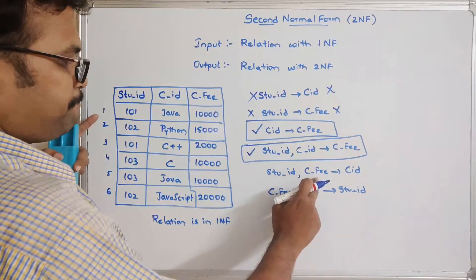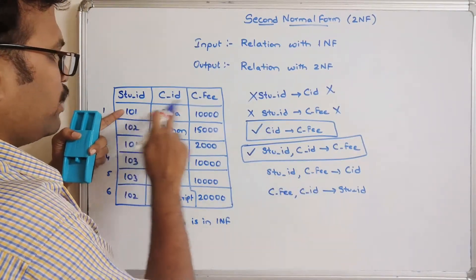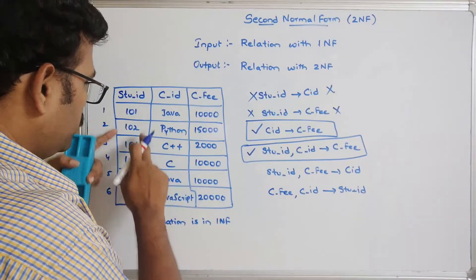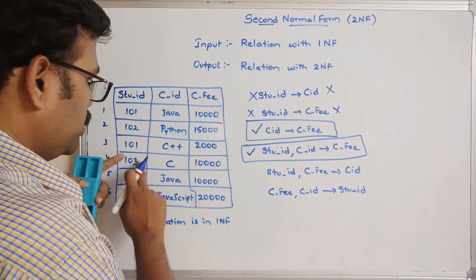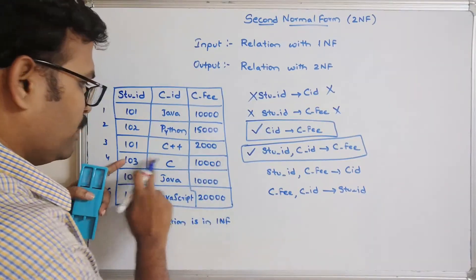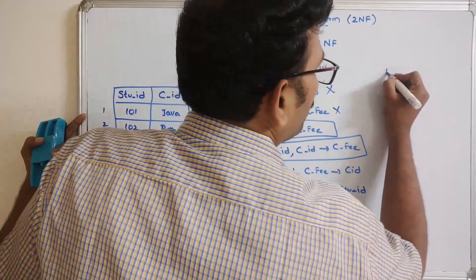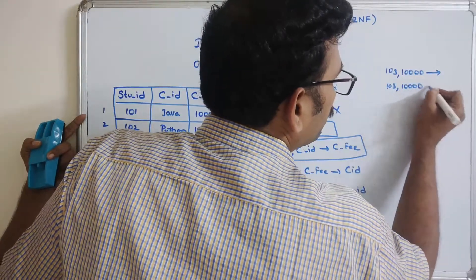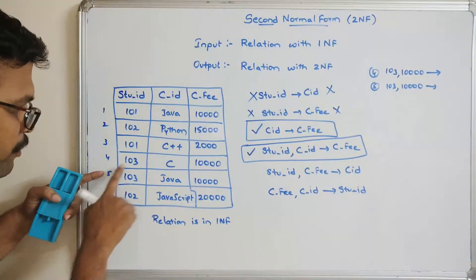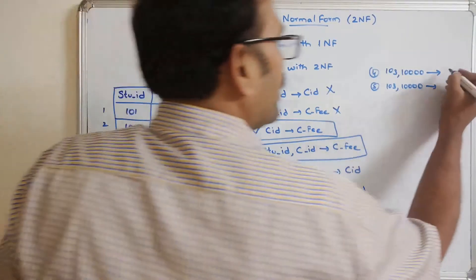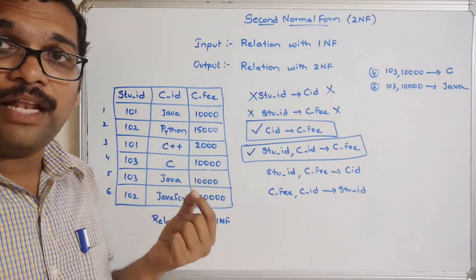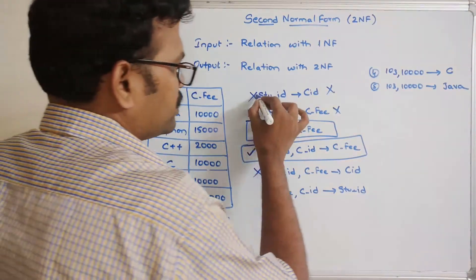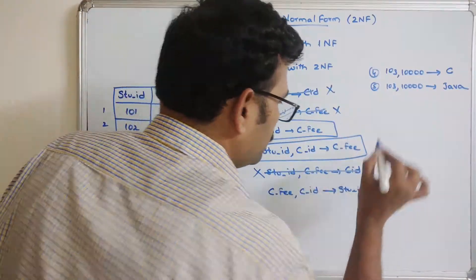Checking student ID, course fee → student ID: taking tuples 4 and 5, both have student ID 103 and course fee 10,000. The corresponding course IDs are C and Java — different Y values for the same X value — so this is not a functional dependency. Similarly, checking course fee, course ID → student ID: tuples 1 and 5 both have 10,000 and Java, but give student IDs 101 and 103 respectively. Different Y values, so this is also not a functional dependency.